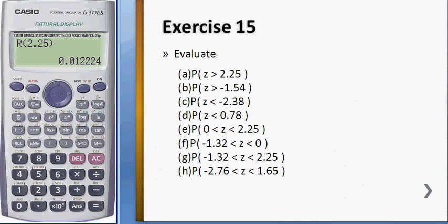For question b, you have R of negative 1.54, and this will give you 0.93822.